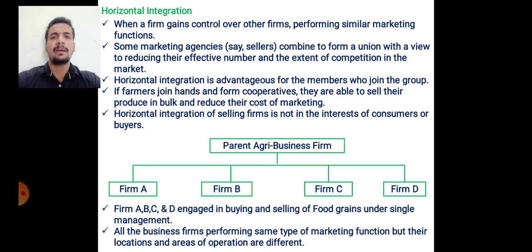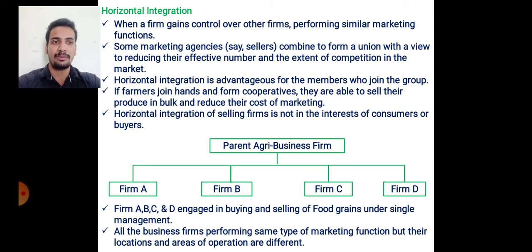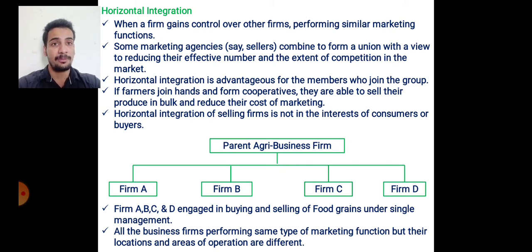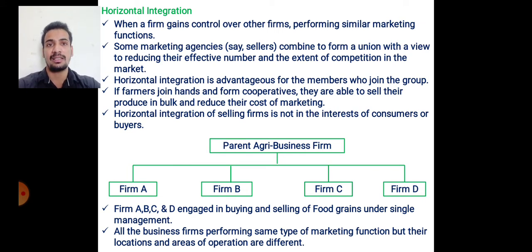Consider the example of a parent agribusiness firm. Suppose one agribusiness firm has firms A, B, C, and D engaged in buying and selling of food grains under a single management. All the business firms perform the same type of marketing function, but their locations and areas of operation are different. All firms A, B, C, and D are controlled by the parent agribusiness firm but their locations differ. Such type of integration is called horizontal integration.